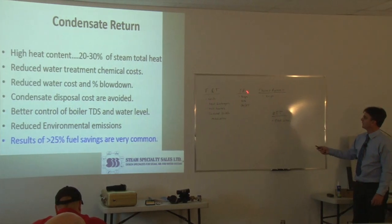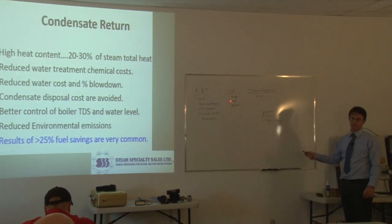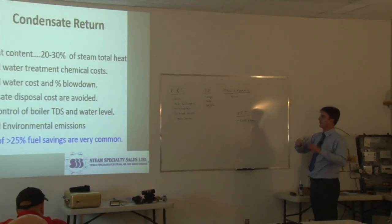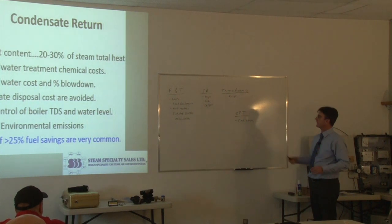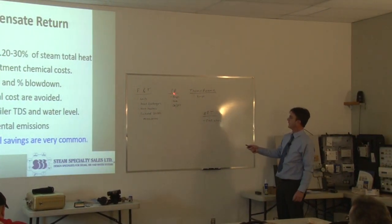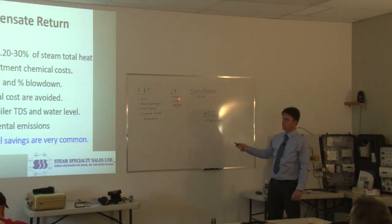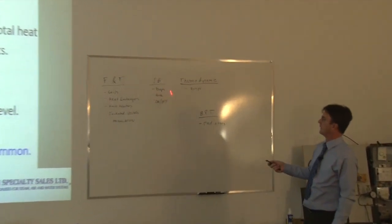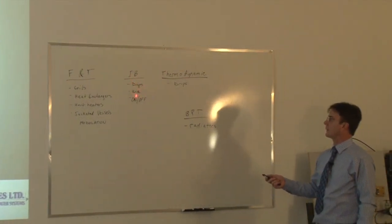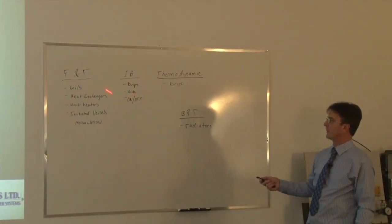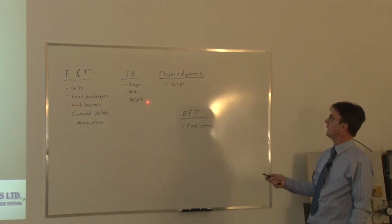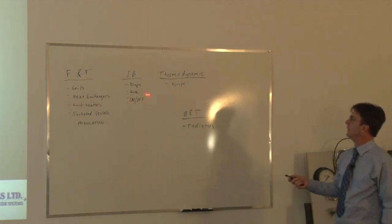Inverted buckets are typically used on drip applications. The drips are the end of lines, or anywhere there's a steam trap along a steam main — those are drip points to get rid of the condensate that builds up in the main. They can also be used on unit heaters, but I prefer to use an F&T. Anywhere there's an on-off application.